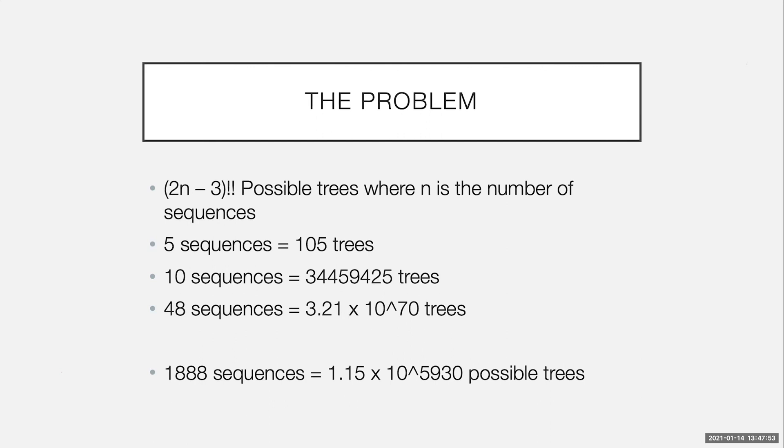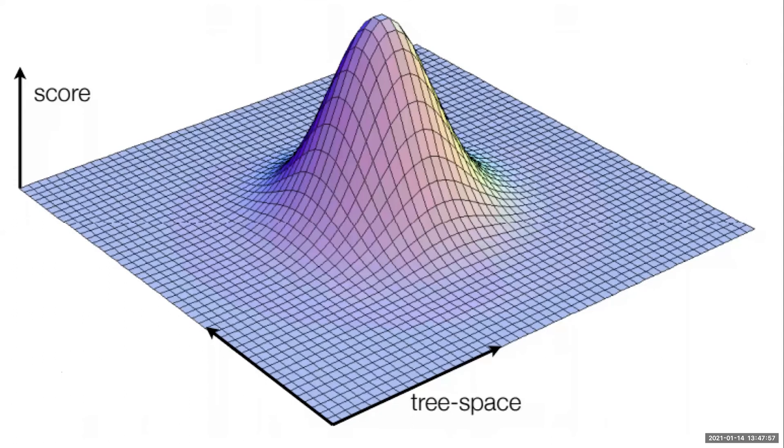So what do we do instead? We search so-called tree space. So this is a visualization of what tree space kind of looks like. If you imagine each square is a possible tree, and to find the right tree, you have to explore the whole space. But you don't want to explore every single square because, as you can see in the upwards axis, some of them have better scores than others.